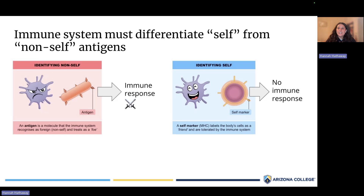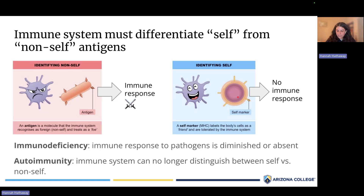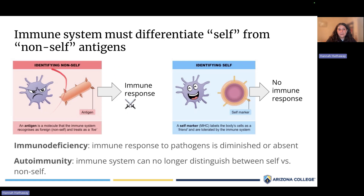That is the normal function of the healthy immune system. When thinking about diseases and disorders related to a dysfunctional immune system, there are essentially two categories. We can have immunodeficiency — that's when the immune system is not working as well as it should be. In that case, the immune system would have a hard time identifying non-self and would essentially treat it like self and just ignore it.